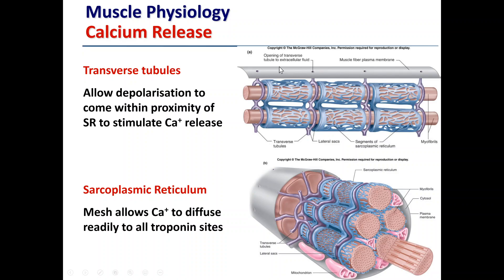Here's the sarcolemma, or the muscle fiber plasma membrane. The structures denoted in purple are known as the transverse tubules. They allow the depolarization coming from the electrical stimulus to come within close proximity of the sarcoplasmic reticulum, where calcium is actually stored, to stimulate calcium release. The sarcoplasmic reticulum is a mesh-like structure — effectively a sac, a storage depot for calcium. Calcium is in high concentration within the sarcoplasmic reticulum, and it has close proximity to the filaments of the muscle fiber, allowing calcium to diffuse readily to all the troponin sites that control access to the myosin binding sites on actin, thereby regulating muscle contraction.